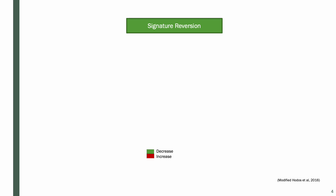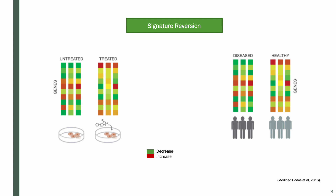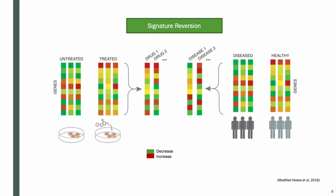The idea with signature reversion is that we have gene expression profiles from disease and control individuals, and we identify genes that are up and down regulated. We also have perturbation profiles from cell lines before and after treatment to identify which genes go up and down with perturbation of a drug. Then we compare these profiles to each other, and we want to identify a profile that has the opposite signature to the disease.